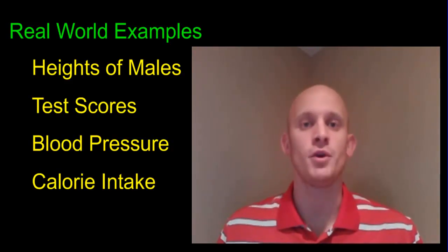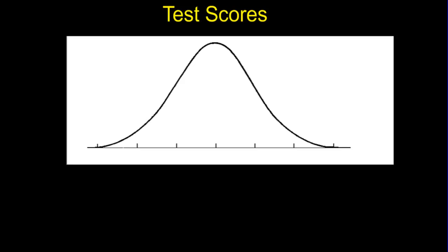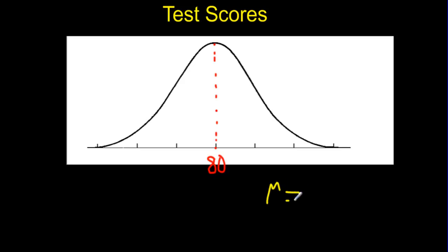Let's take a look at what this looks like on the normal curve. We're going to look at test scores and how they can follow a normal curve. Let's say that we gave a test to 100 students and the average test score was 80%. Since they follow a normal distribution, the average score falls right in the middle of all the test scores — that would be our 80%. This average for a population is called mu, so our mu, the symbol for the average of a population, is 80.